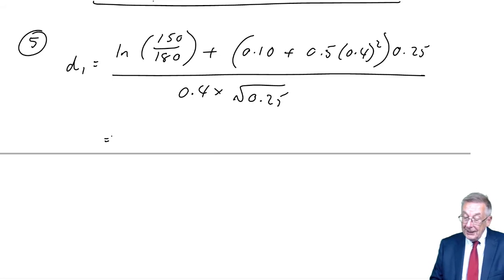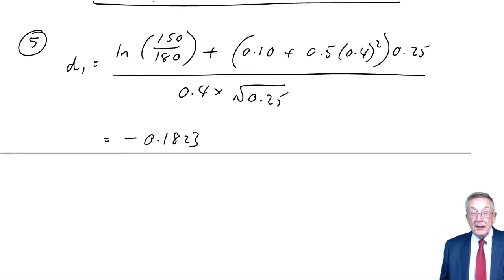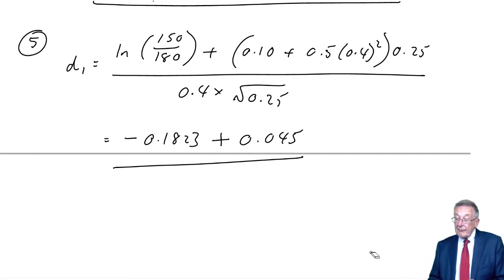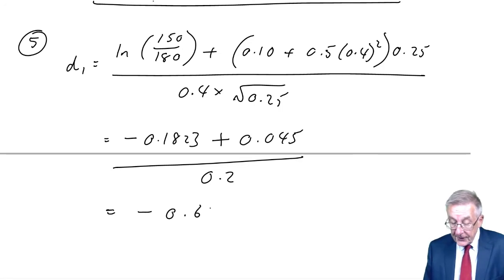Log to the base e of 150 over 180 is minus 0.1823, and this sign's going to matter. Then 0.4 squared times 0.5 plus 0.1 times 0.25 is 0.045, divided by the square root of 0.25 times 0.4 which is 0.2. This gives me D1 of minus 0.1823 plus 0.045 divided by 0.2, which is minus 0.6865.